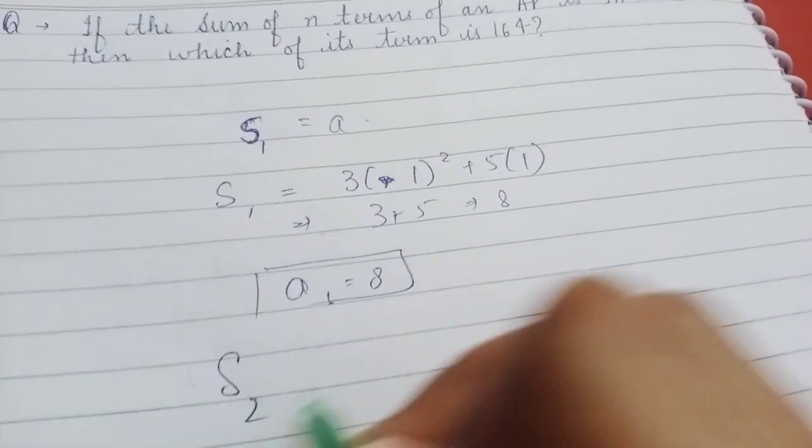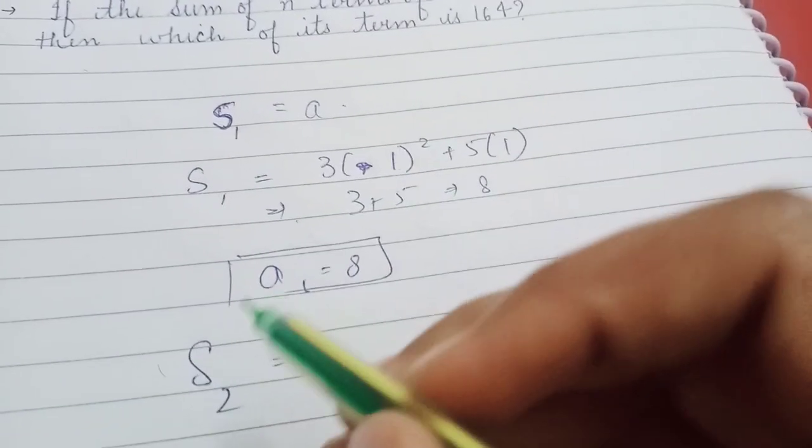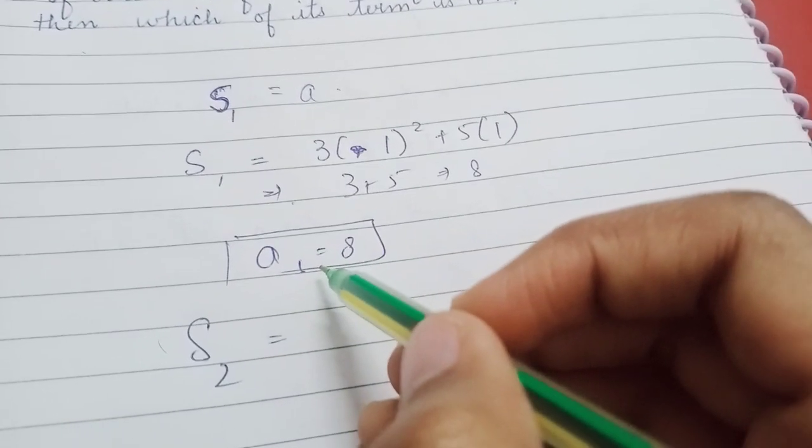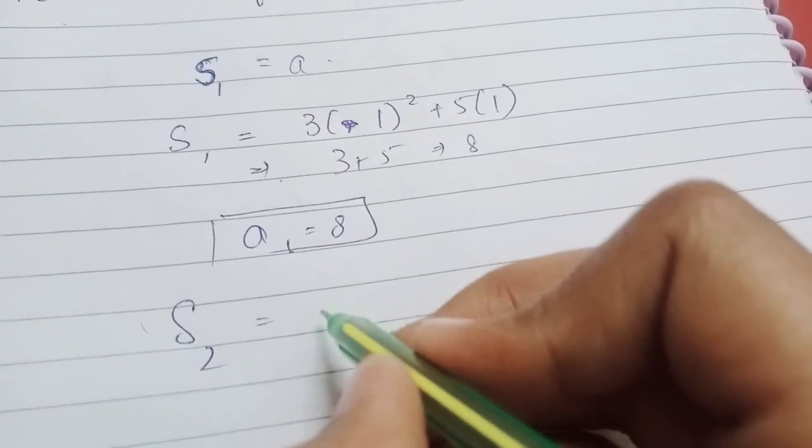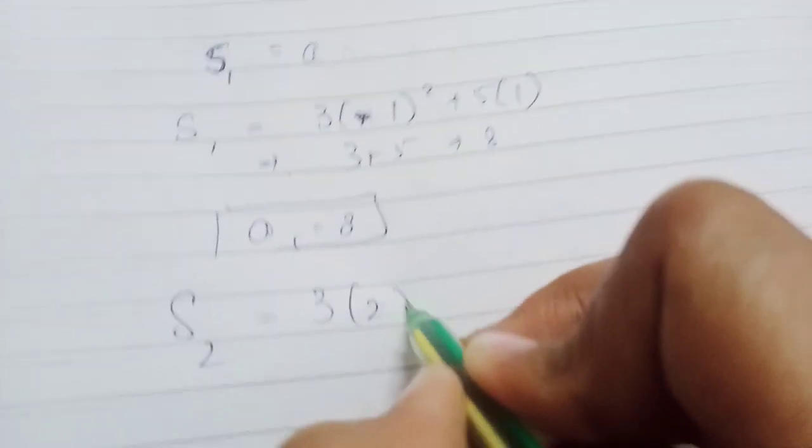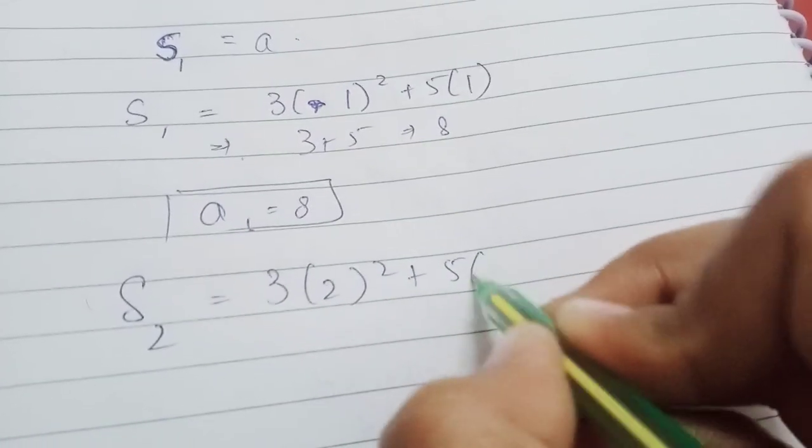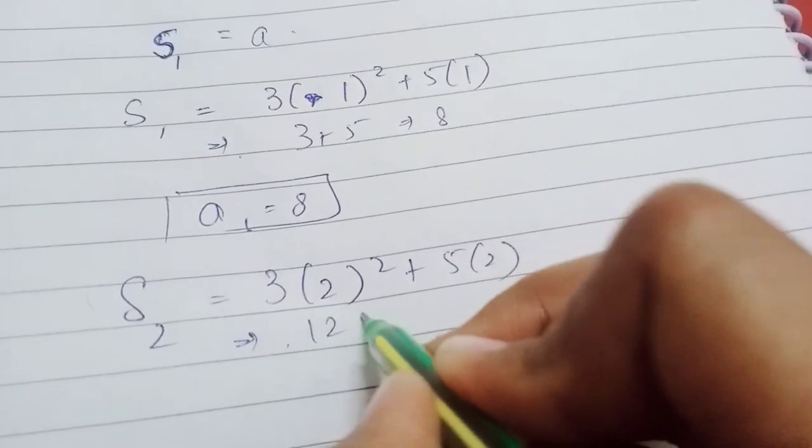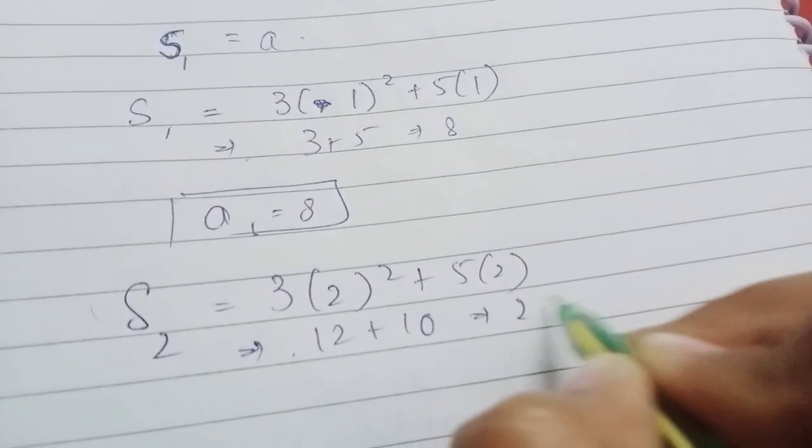Now, let us find sum of two terms of AP. Sum of two terms of AP minus first term will be equal to its second term. So, S₂ will be 3 into 2 squared plus 5 into 2, this will be 3 into 4, 12, 12 plus 10, 22.